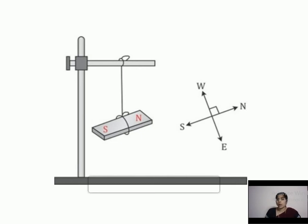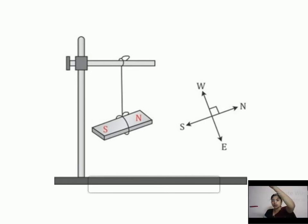The magnet always comes to rest along the same direction — the north-south direction — even after being disturbed again and again. No matter how many times you disturb this magnet, it will always come to rest in the north and south direction.